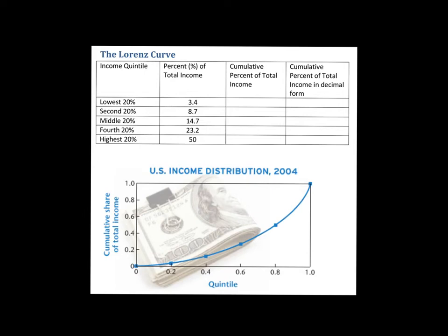We're going to discuss the Gini index and the Lorenz curve, and the role of the Lorenz curve in the Gini index. First, we need to talk about what we call quintiles. The word quintile means we've broken income distribution into five equal parts. So let's say we lined everybody up.